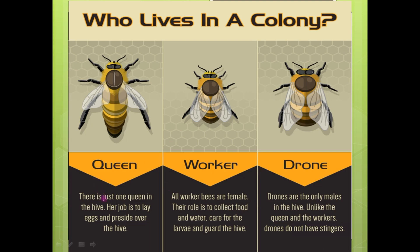The queen is the authority of the colony. Her job is to lay eggs and preside over the hive, and there is only one queen in the hive. All the worker bees are females — their role is to collect food, water, and care for larvae and guard the hive. They are the real workers. The third member in a colony is the drone — they are basically the males in the colony. Unlike the queen and worker, the drones do not have any stingers. These are the three types of members in a beehive.